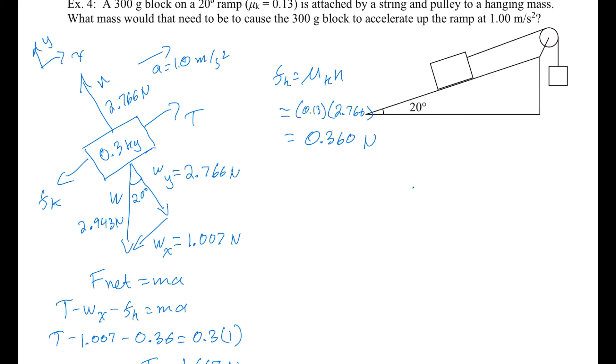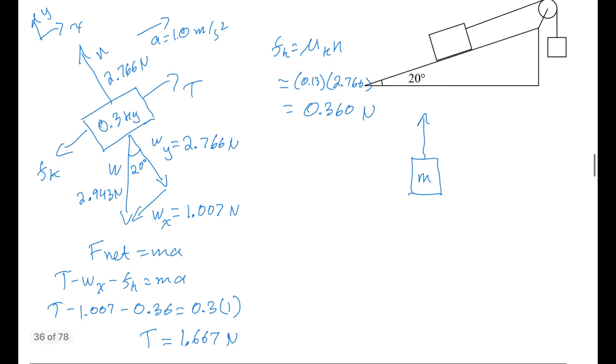But now we have to look at what's going on over there. And they don't tell us what the mass is. So we don't know what that mass is. We know that there is a force pulling up in the string. And we just figured out that that tension was 1.667 newtons.